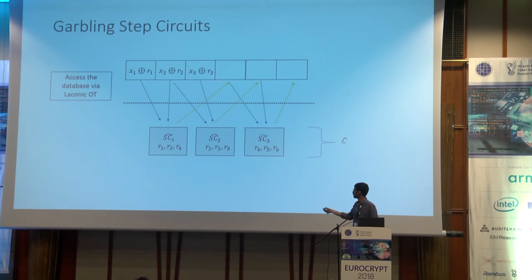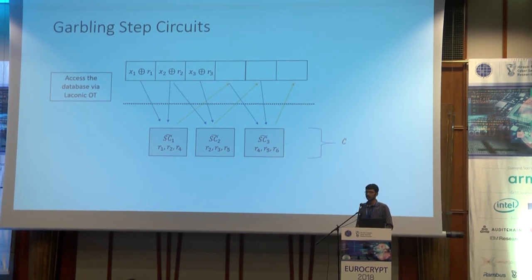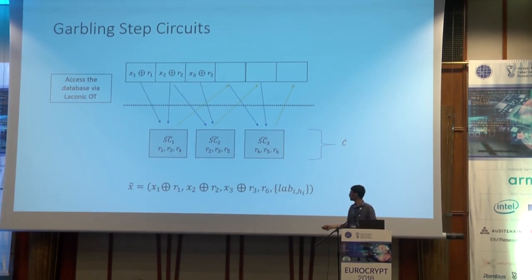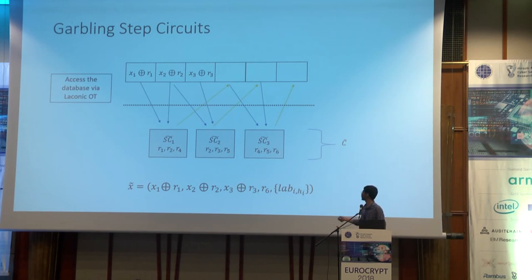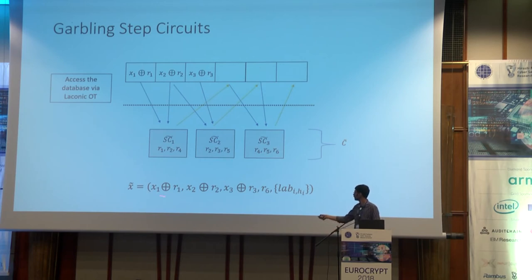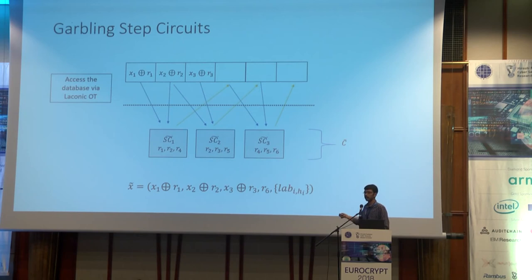The garbled step circuits, together with how they access the database, constitute the garbled circuit C-tilde. The garbled input X-tilde consists of the masked values of the inputs, the output mask so one can recover the output from the final location, and the labels corresponding to evaluating the first step circuit — specifically the labels for the initial hash value. The masked input values are N bits, the output mask is M bits, and the labels are poly(λ) long, giving an online cost of N plus M plus poly(λ).